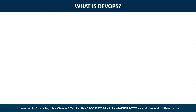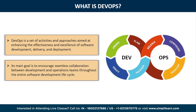Now let's jump into the video. But before moving ahead, let's first understand what is DevOps. DevOps is a set of activities and approaches aimed at enhancing the effectiveness and excellence of software development, delivery, and deployment. It brings together the realms of software development (Dev) and information technology operations (Ops). The main goal of DevOps is to encourage seamless collaboration between development and operations teams throughout the entire software development lifecycle. It achieves this through automation, continuous integration, delivery, and deployment, thereby accelerating the process and minimizing errors in software development.